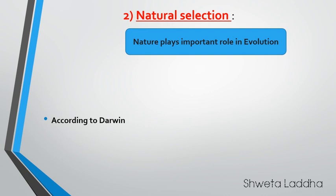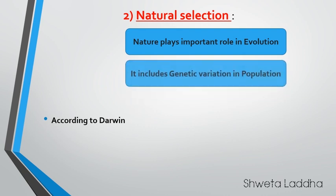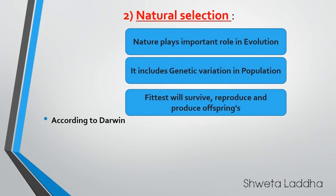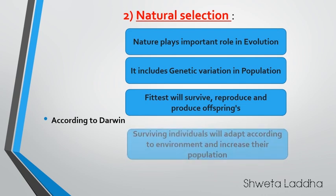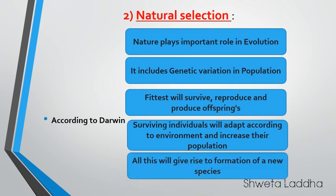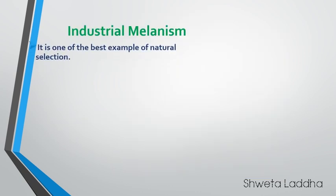After this, we will discuss natural selection. According to Darwin, nature plays a very important role in evolution. It includes genetic variation in population. Only the fittest organisms will survive — they will reproduce and produce offspring. They are able to survive because they adapt very well to the environment, changing either their morphology or their behavior, and eventually their genes change so that they can adapt. Natural selection plays a very important role in evolution. Let us see the example of industrial melanism to understand natural selection.